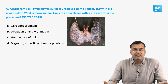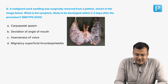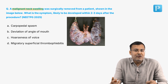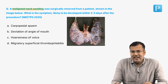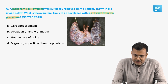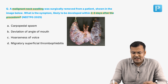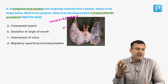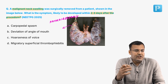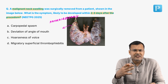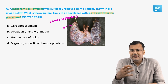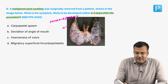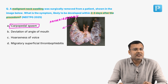See the second question, also taken from NEET PG 2025. A patient with a malignant neck swelling had it surgically removed. What symptom is likely to develop within 2 to 3 days after the procedure? The name of this surgery is thyroidectomy. On the second to fifth day, the patient is going to have manifestations of parathyroid insufficiency due to vascular infarction, manifesting as hypocalcemia like carpopedal spasm. The correct answer is carpopedal spasm.